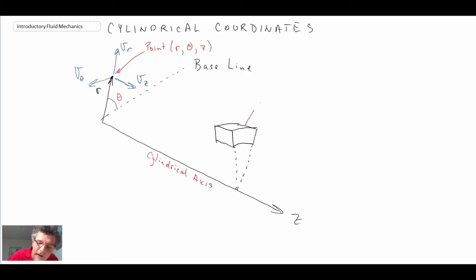What we can say is that this length here would be dz because it's in the cylindrical axis direction. This here on this side is dr because we have a coordinate r.